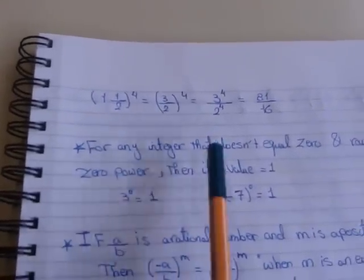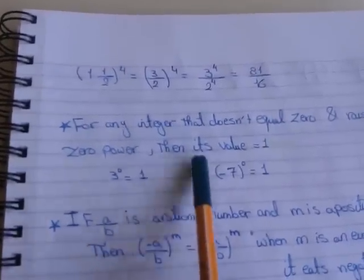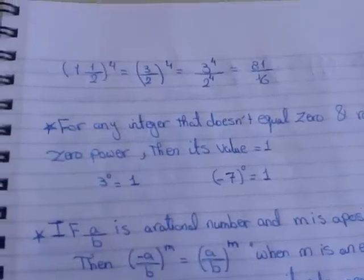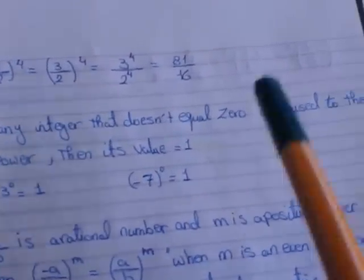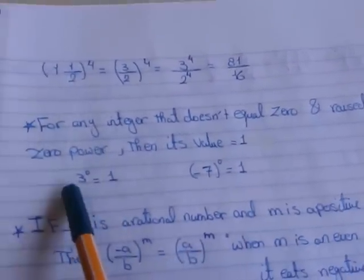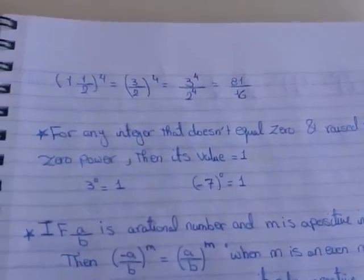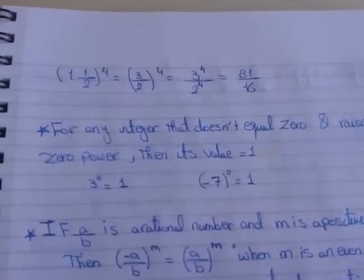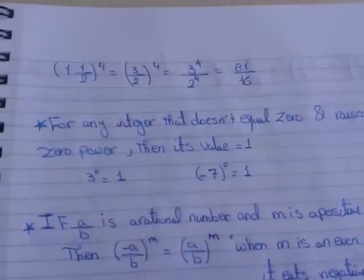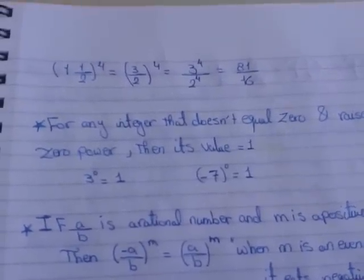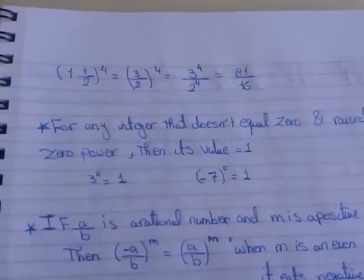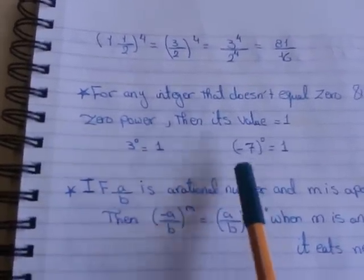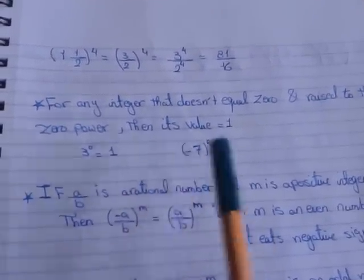For any integer that doesn't equal 0 — like 1, 2, 3, negative 1, any number — raised to the power 0: any number except 0 to the power 0 will give me 1. Like, 3 power 0 equals 1, and negative 7 power 0 equals 1.